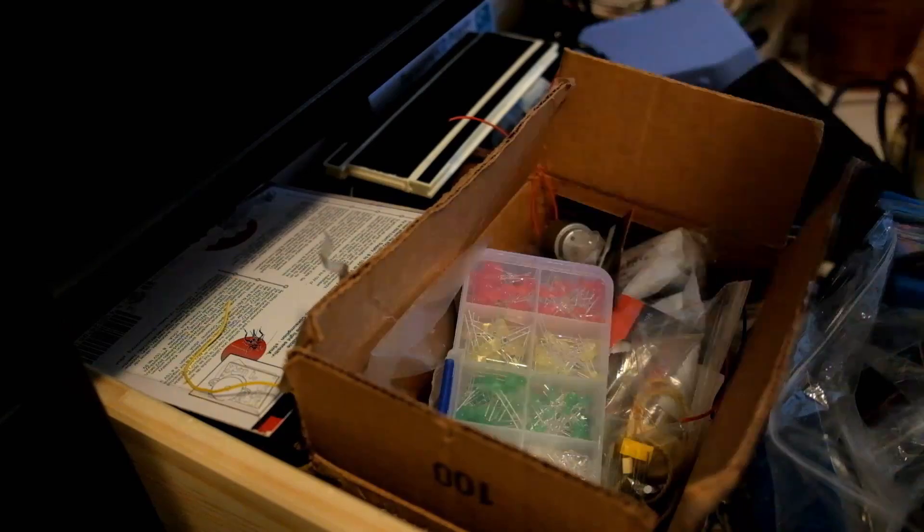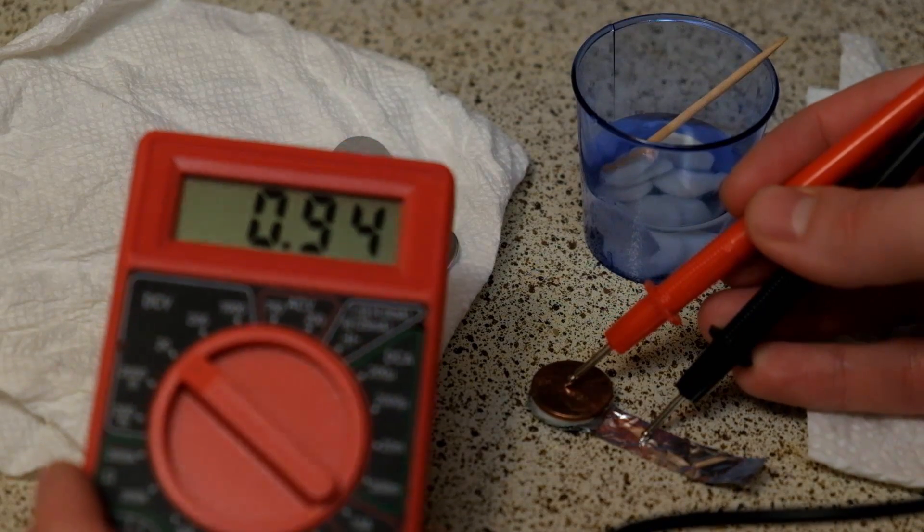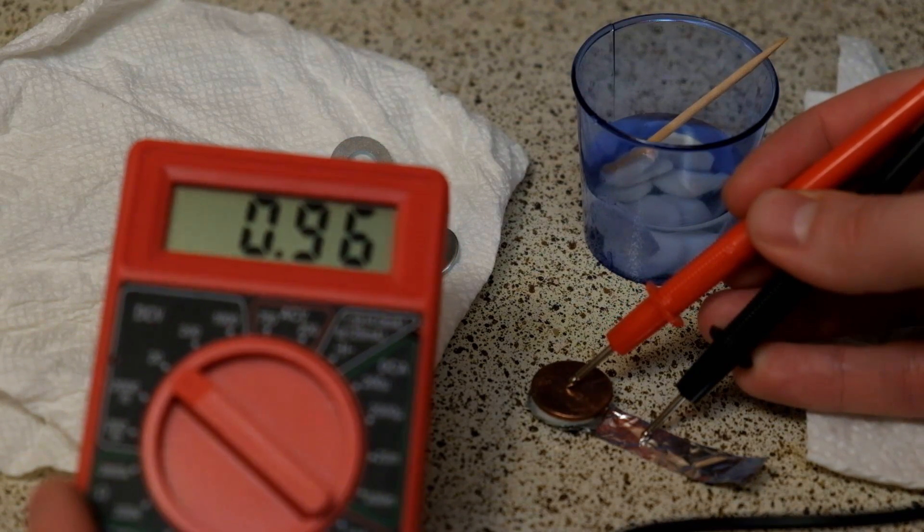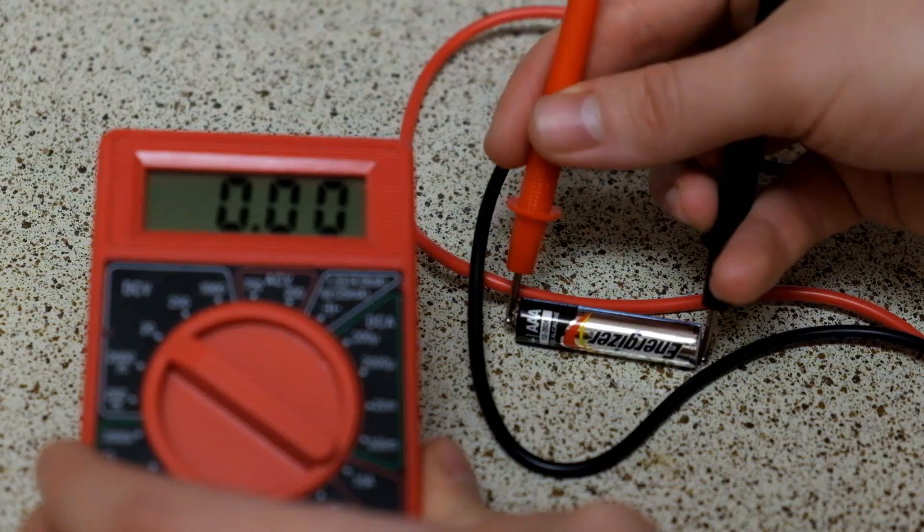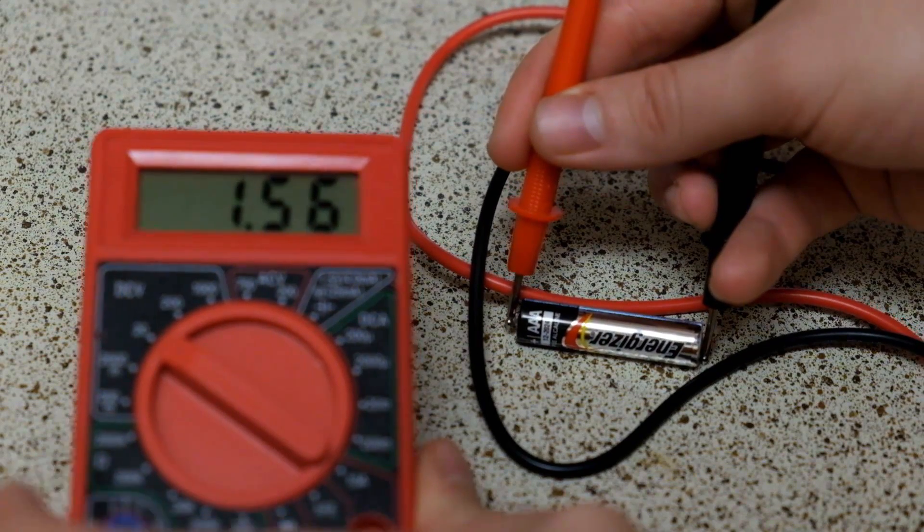If you have a multimeter, it's helpful to check the voltage. I'm already getting almost a single volt, which is pretty good. By comparison, a normal AAA battery is about 1.5 volts.